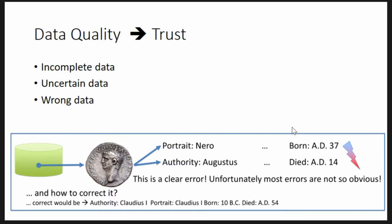As a computer scientist, I have no chance to correct this because I look at the coin and have no clue — I need to go to the domain experts. This is always a long process because it takes time: you need to explain why you think something is incorrect, and then they explain why it's actually correct for a different reason. Correcting errors afterwards is always painful and takes much longer, so if you take care at the beginning, it saves a lot of time.